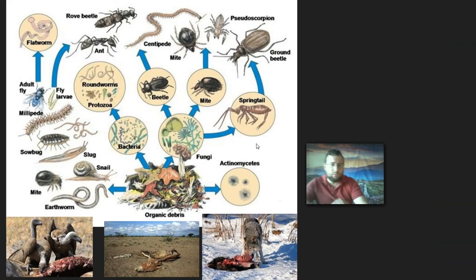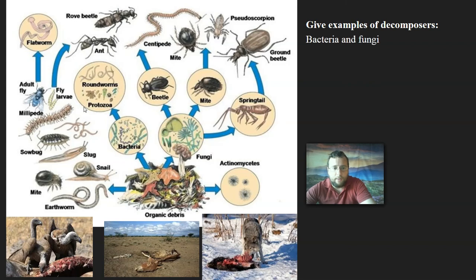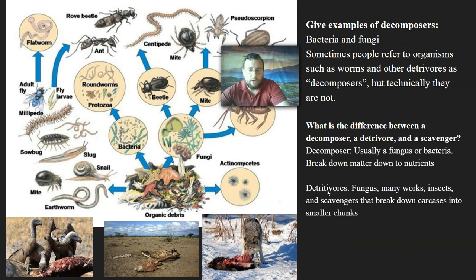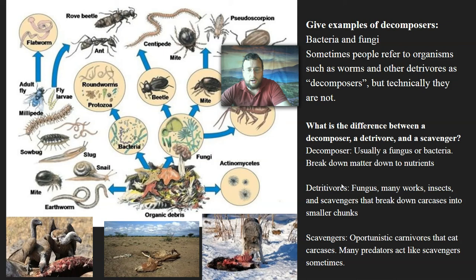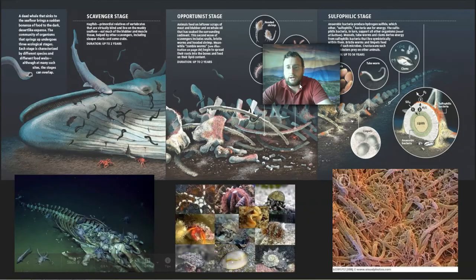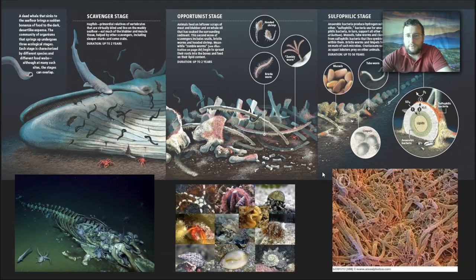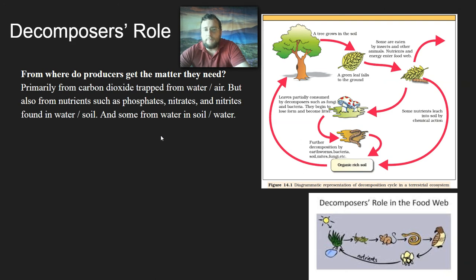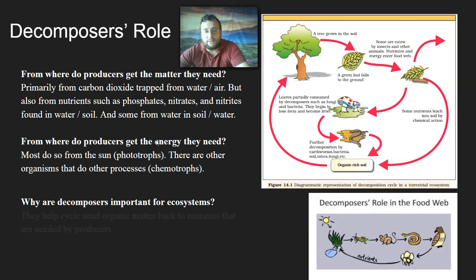The second objective has to do with the key role that decomposers play. Decomposers is a word sometimes used interchangeably for any organism that eats dead stuff, but technically only bacteria and fungi are real decomposers — the ones that break down matter back to essential nutrients. The other ones are called detritivores, which eat and break food down into larger chunks and feed on carcasses. A special type of detritivore is called scavengers — opportunistic predators that eat carcasses and sometimes also act like predators. The decomposers' key role is to provide the matter that producers need. Producers primarily get their carbon from the air as carbon dioxide, but they also need essential nutrients like phosphates, nitrates, and nitrites, which can be found in soil and water thanks to decomposers.